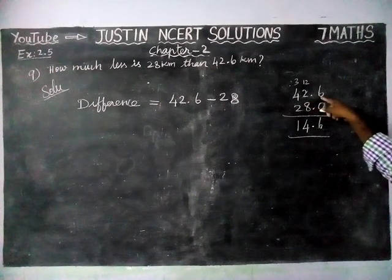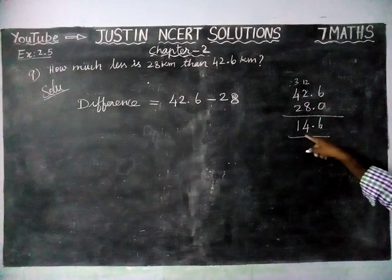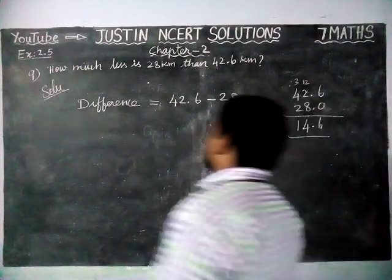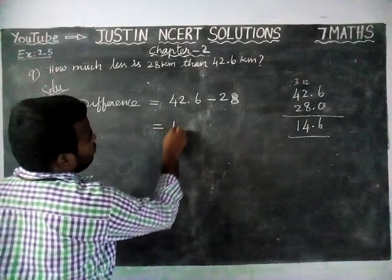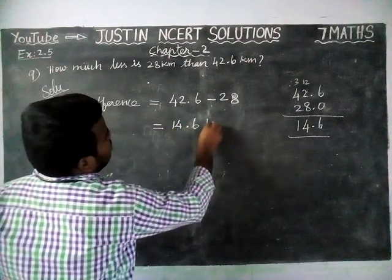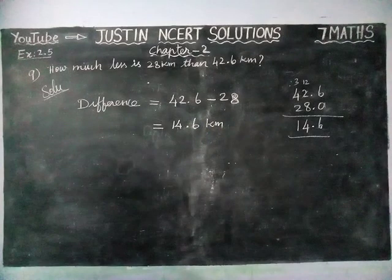So the difference between 42.6 and 28 is 14.6. So the answer is 14.6 km.